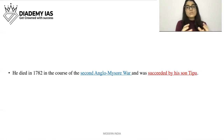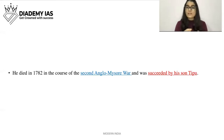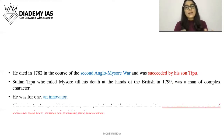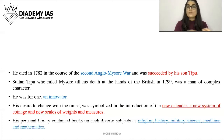We will cover all the Anglo-Mysore Wars in detail in separate classes. Tipu Sultan, who ruled Mysore till his death at the hands of the British in 1799, was a man of complex character. He was very innovative — he introduced a new calendar, a new system of coinage, and new scales of weights and measures. Many exam questions ask which of these things were introduced by Tipu Sultan.